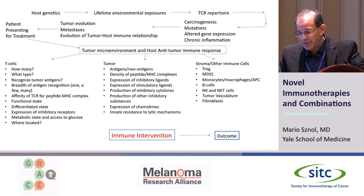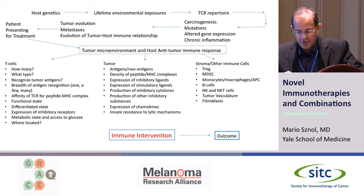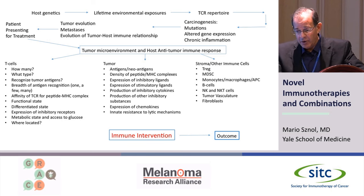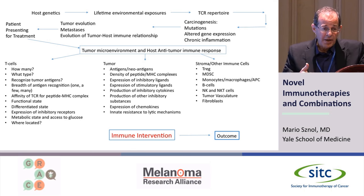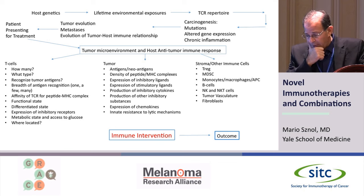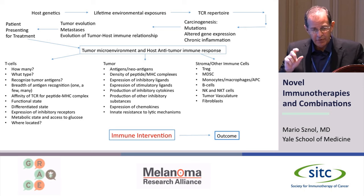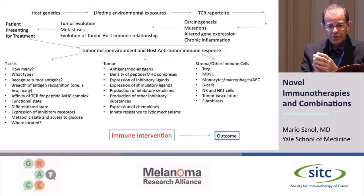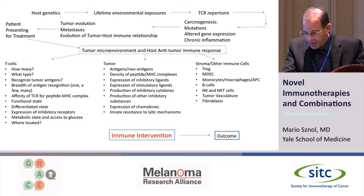When we try to decide what combinations or drugs to give, we'd need to consider what T cells are in the tumor, how many T cells there are, what antigens they're recognizing, how many antigens, and how strongly that T cell recognizes those antigens. We'd also need to know the state of those lymphocytes, because there can be many different states — a healthy T cell, a sick T cell, and things in between.